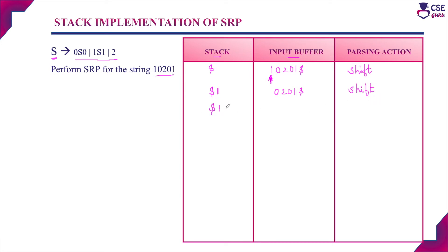The next element is 0, so the top of the stack is now 0. We check for a handle — 0, or 1 0 — but there is no matching substring. The remaining elements in the input buffer are 2, 0, 1.